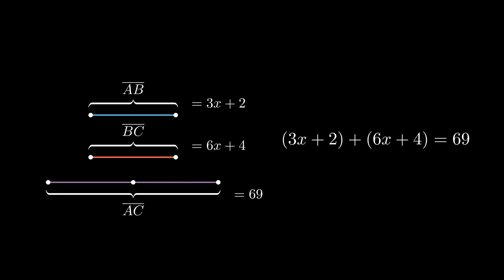Simplify the expression and we get 9x plus 6 equals 69. Subtract by 6 on both sides and finally divide by 9 on both sides and we get x equals 7.